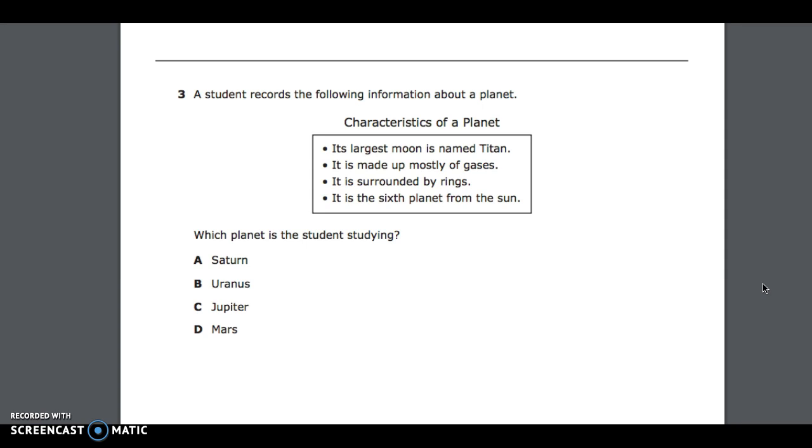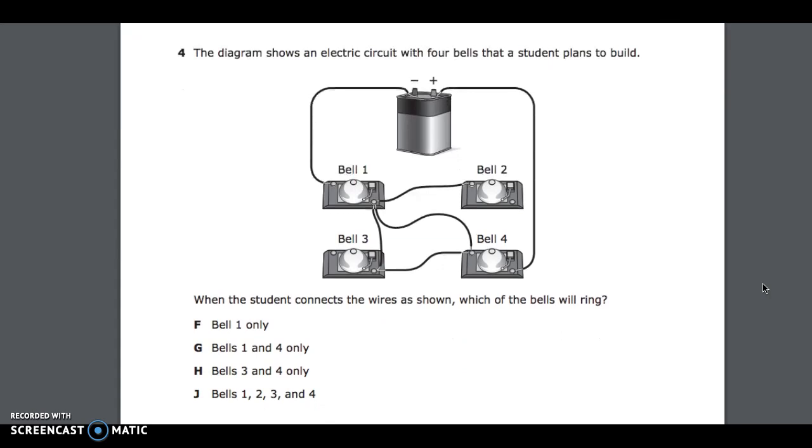Number 4. The diagram shows an electric circuit with four bells that a student plans to build. When the student connects the wires as shown, which of the bells will ring? F, Bell 1 only; G, Bells 1 and 4 only; H, Bells 3 and 4 only; J, Bells 1, 2, 3, and 4.